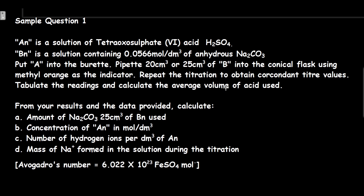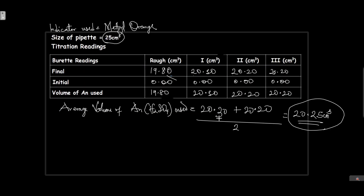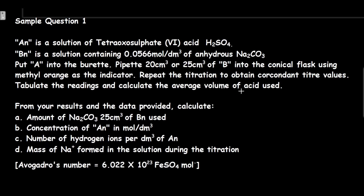From the question, we need to tabulate the results and calculate the average volume of acid used, which we did from the titration. From the results, we took the two concordant values, which are 20.30 and 20.20. Some of you may use 20.20 and 20.20 because they are close together, but I'm using both. So the average volume of acid used is 20.25 cm³, which is our VA.